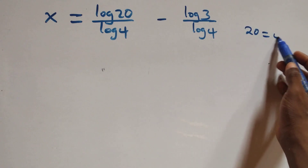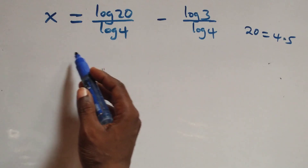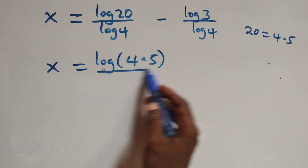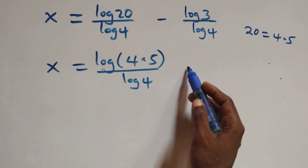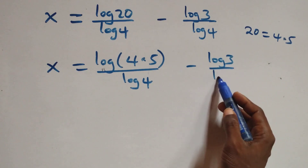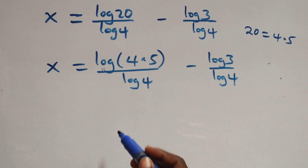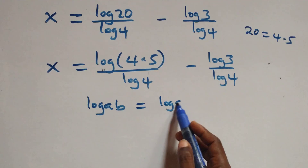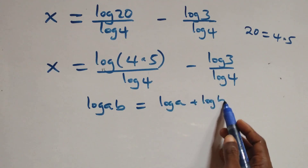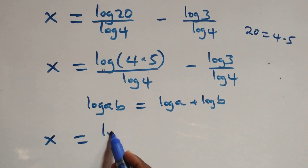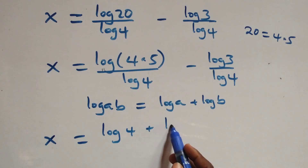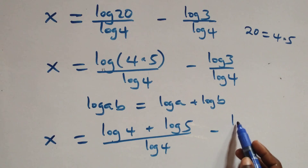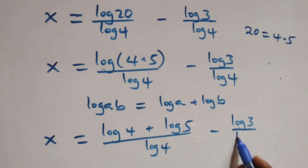Now 20 can be written as 4 times 5, so we have x equals to log(4 times 5) over log 4 minus log 3 over log 4. Applying the product rule of logarithms — log(a times b) equals log a plus log b — we get x equals to (log 4 plus log 5) over log 4 minus log 3 over log 4.